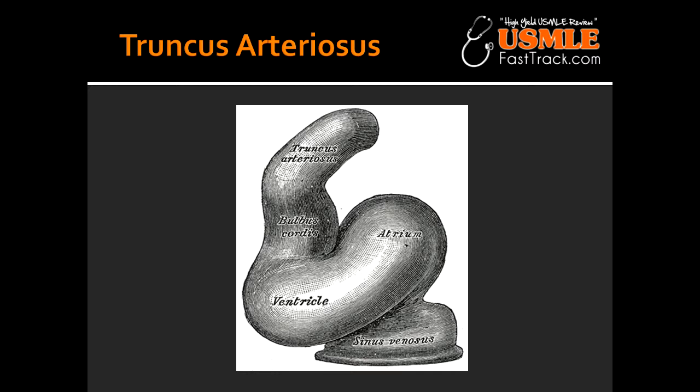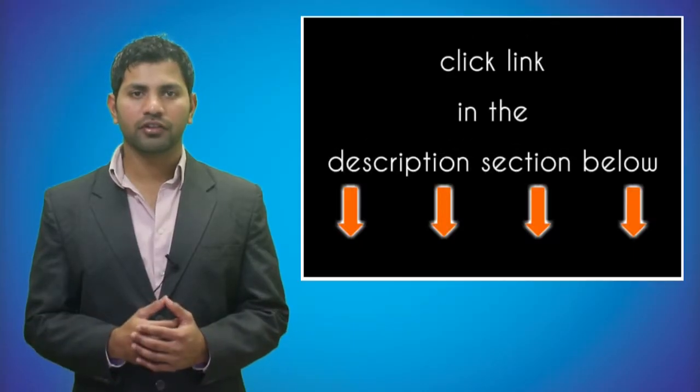Some of the pathologies that can arise if there is a problem in the truncus arteriosus — due to failure of migration or failure to spiral and fuse — include transposition of great vessels, which is failure to spiral; tetralogy of Fallot, which is a skewed aorticopulmonary septum development; and persistent truncus arteriosus, which is due to partial aorticopulmonary septum development.